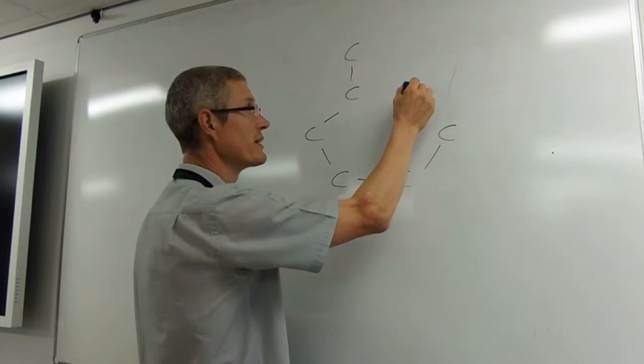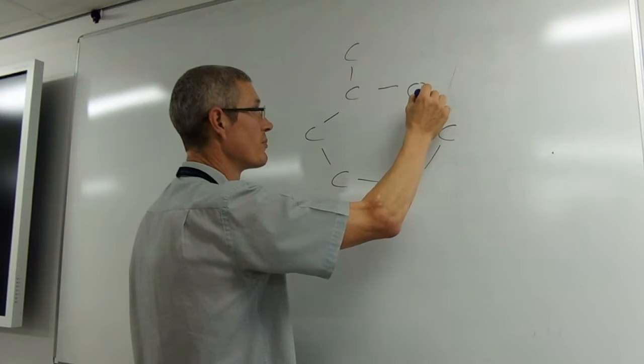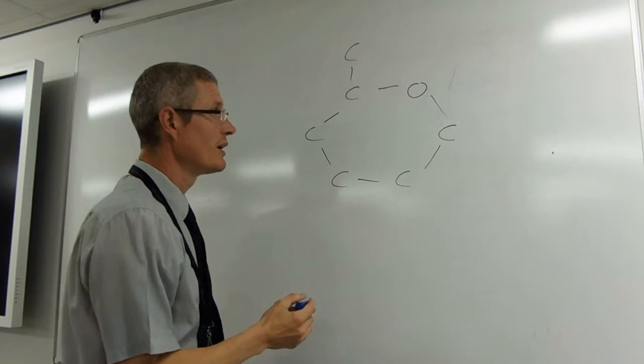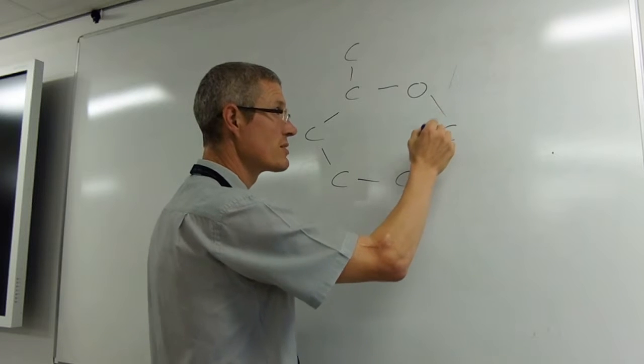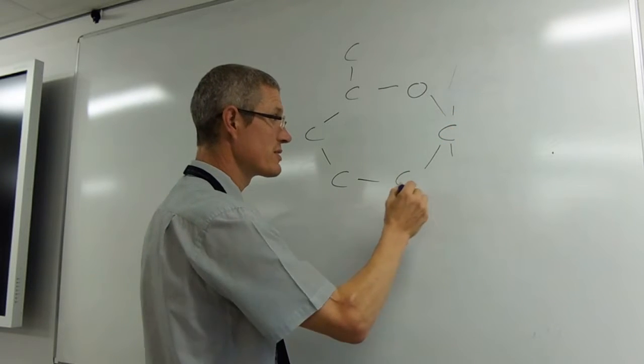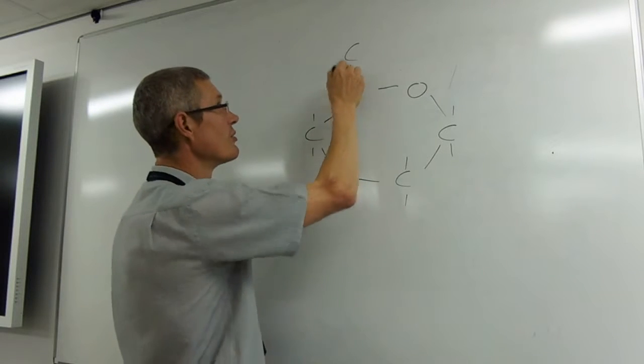The ring is completed with an oxygen. And as you know, carbon has four bonds. That one's got two, so it's going to have another two there. So each one's got to have four.